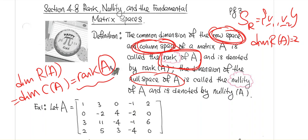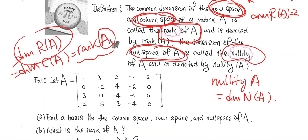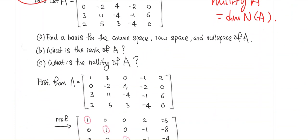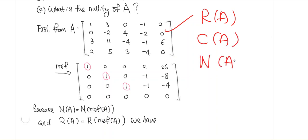Nullity of A is the dimension of the null space of A. Now let's look at why the dimension of the row space and the dimension of the column space are always the same. Recall from the previous video: you have a matrix A, and we studied how to find a basis for the row space, column space, and null space. We also know that the row space of A and the row space of the RREF of A are the same.